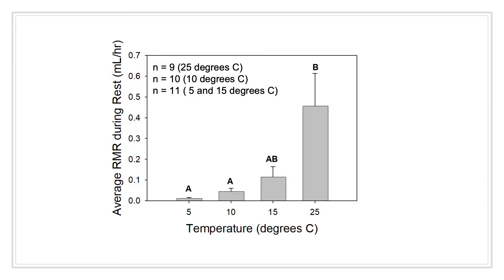Mean RMRs using individuals at rest follow a similar pattern as during DGC, however fewer significant differences between treatments were found. Both the 25 and 5 degrees Celsius treatments are significantly different, as well as the 25 and 10 degrees Celsius treatments.